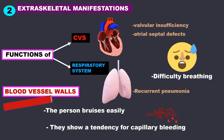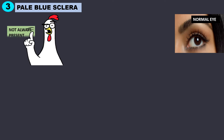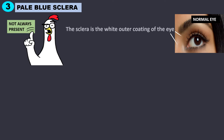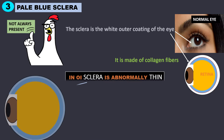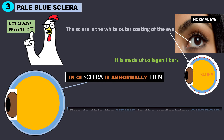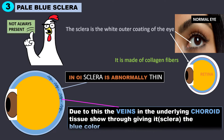Another common feature is the occurrence of pale blue sclera, though note that this is not always present. The sclera is the white outer coating of the eye, and it is made of collagen fibers. In OI, the sclera is abnormally thin, and due to this, the veins in the underlying choroid tissue show through it, giving it a blue color.